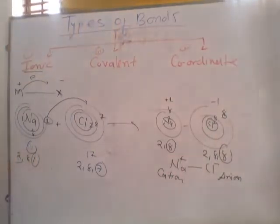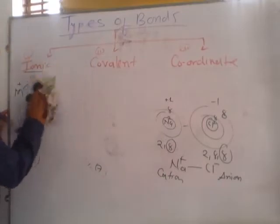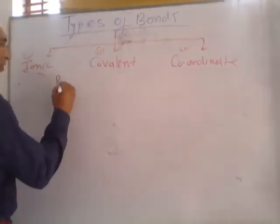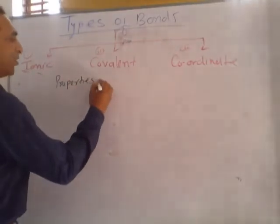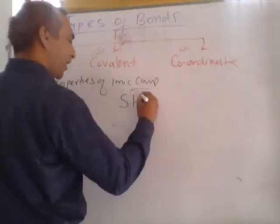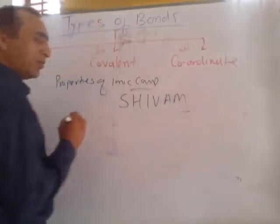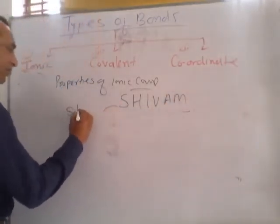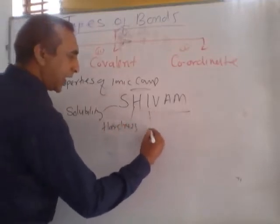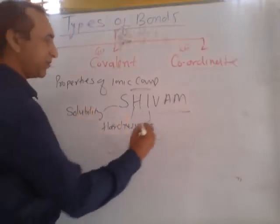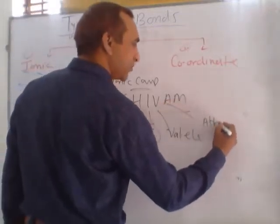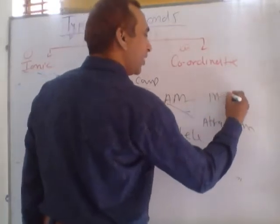If we want to learn the different properties of ionic compounds, I am writing a trick. The topic is properties of ionic compound — meaning the compound in which ionic bond is formed. We can remember the properties by the word SHIVAM: S stands for solubility, H stands for hardness, I stands for current (conductivity), V means valence electron, A means attraction, and M stands for melting point. So there are 6 basic properties of ionic compound.